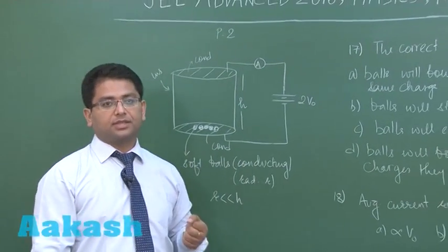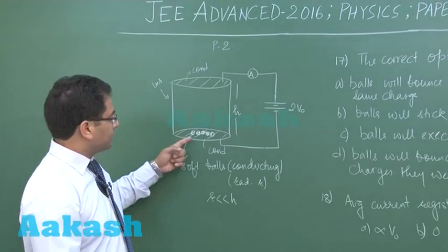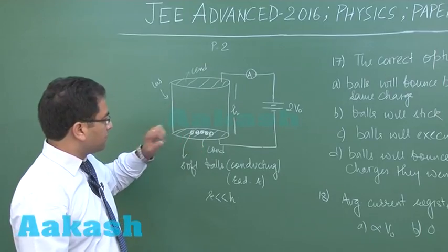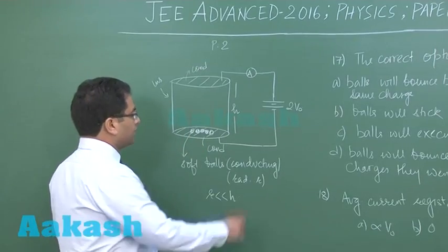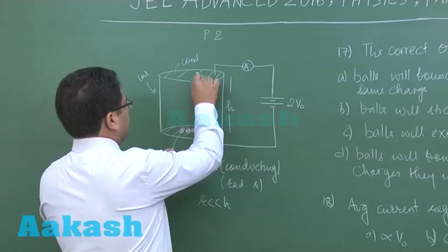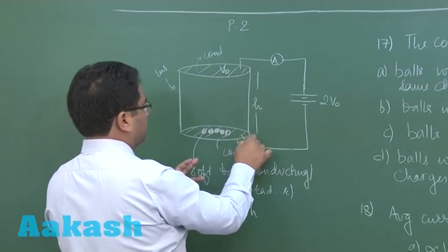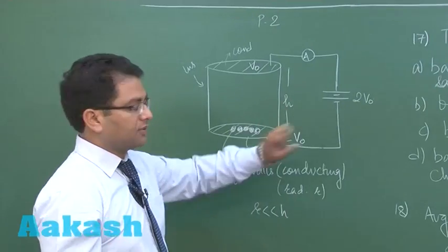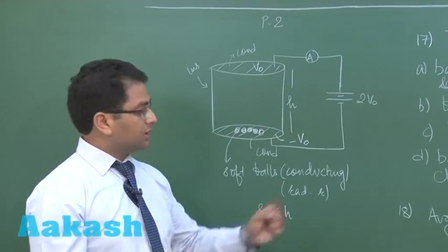Now what happens, you can easily see that whenever there are soft conducting balls connected to this, the potential of this is at V₀, that's given, and this potential is minus V₀, that's also given, and the net potential difference comes out to be 2V₀. The potential has to be given and it's given in the original question.